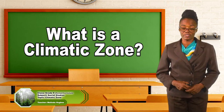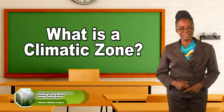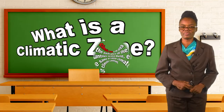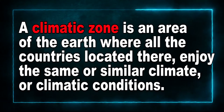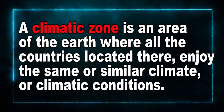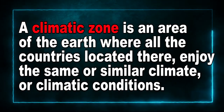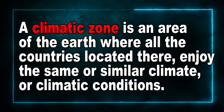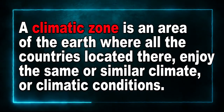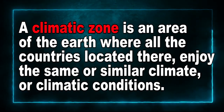So boys and girls, as we begin — what is a climatic zone? A climatic zone is an area of the earth where all the countries located there enjoy the same or similar climate or climatic conditions.